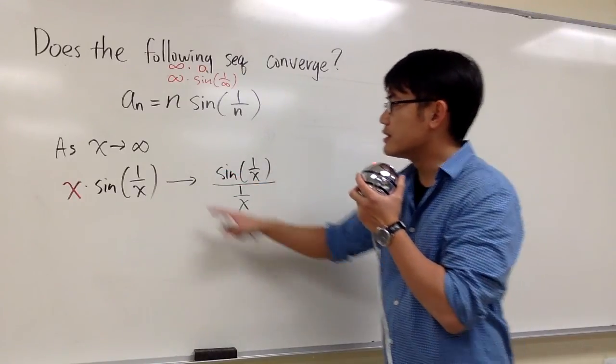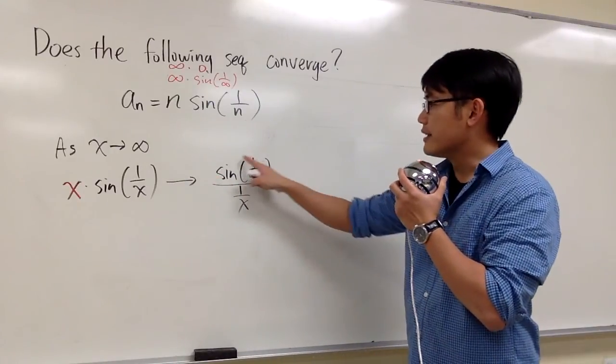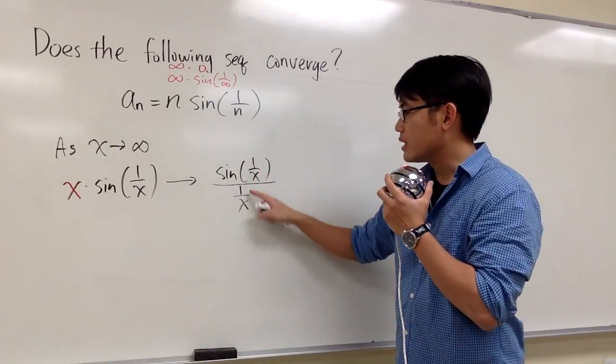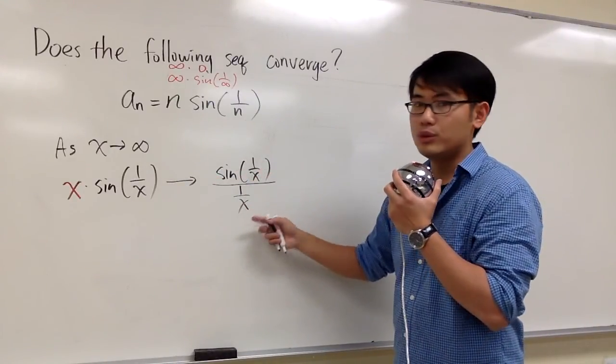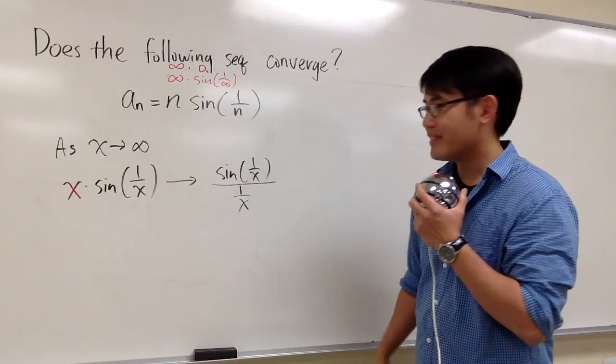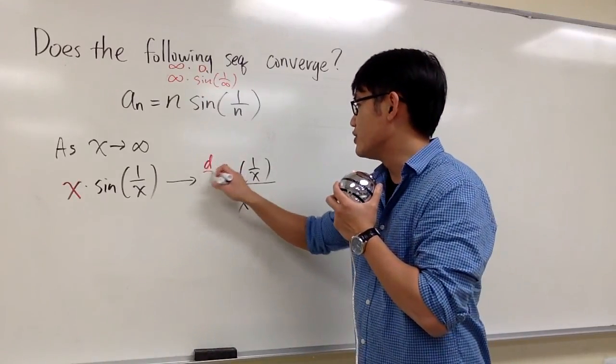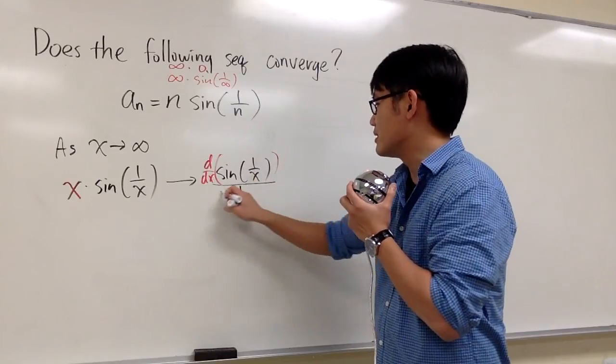The reason we do this is because if x is infinity now, on the top we have 0. On the bottom, we will have 1 over infinity which is also 0. We get to use L'Hôpital's rule. Let's go ahead and differentiate so we can use L'Hôpital's rule and see what will happen.